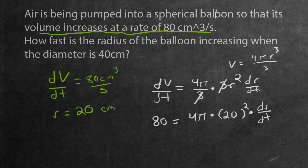And then what we want to do, because dr over dt is essentially the rate at which the radius is changing. And that's exactly what we're looking for in this question, which means we need to solve for it. And if we were to do that, it would be 80 divided by 4 pi multiply 20 squared, which is 400. And all of that is equal to dr over dt.